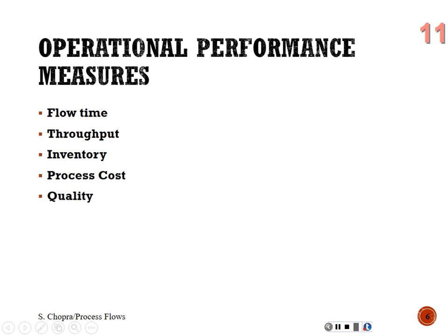Our operational performance measures are flow time, throughput, inventory, process cost, and quality. Flow time is the total time spent by a flow unit within the process boundaries. Throughput is the average number of flow units that flow into and out of the process over a period of time — also called average flow rate. Inventory is the average number of units within the process boundaries. Process cost includes material, labor, energy, and overhead. Quality gurus say that improving quality reduces total system cost.